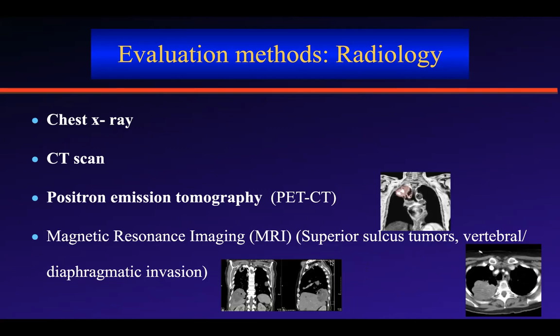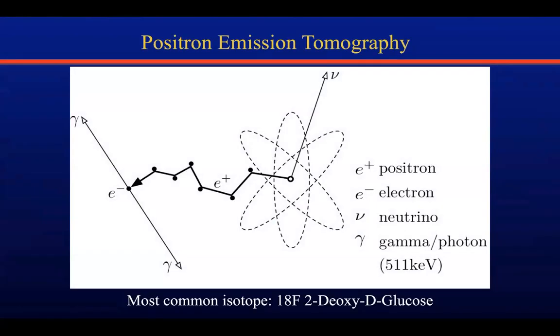MRI is not a good radiological evaluation tool for lung tumors due to the low proton density. However, for superior sulcus tumors or vertebral or diaphragmatic invasion, it gives very important information about the invasion of the tumor and the structures around it. PET-CT is a metabolic nuclear medicine method. Usually 18F-fluorodeoxyglucose is used — it is a radioactive molecule emitting positrons.